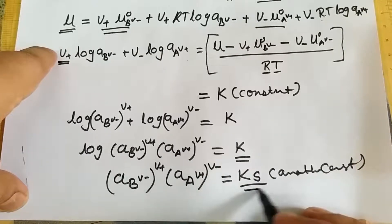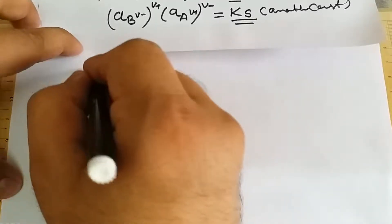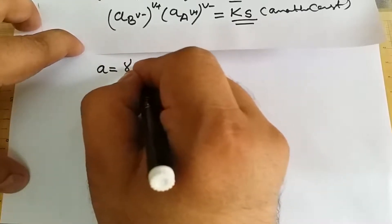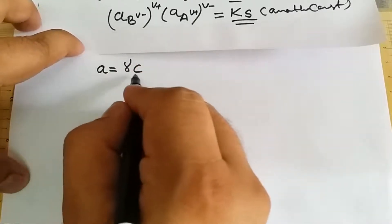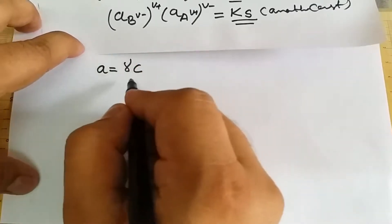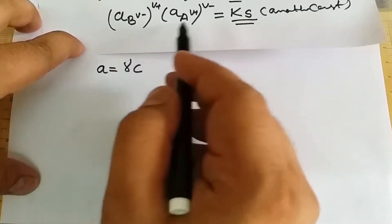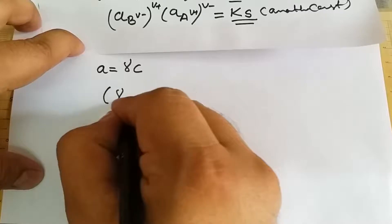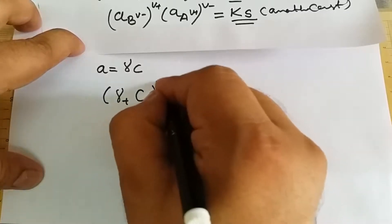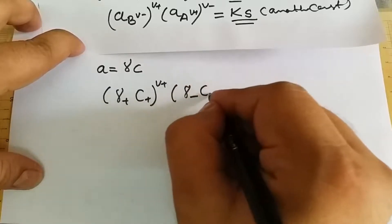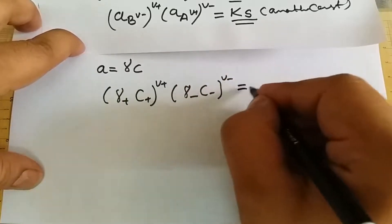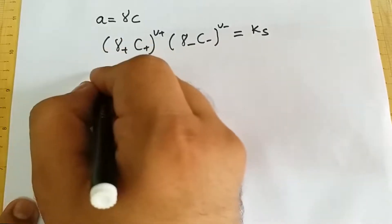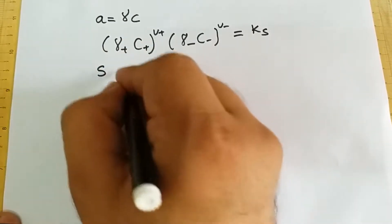Taking the antilogarithm on both sides, and since the right-hand side is constant, the antilog can be written as Ks, another constant. The equation becomes: a(B^(ν-))^(ν+) · a(A^(ν+))^(ν-) = Ks. Since activity is related to concentration by the activity coefficient as a = γc, we substitute activity with the respective activity coefficients and concentrations, giving: (γ+ c+)^(ν+) · (γ- c-)^(ν-) = Ks.